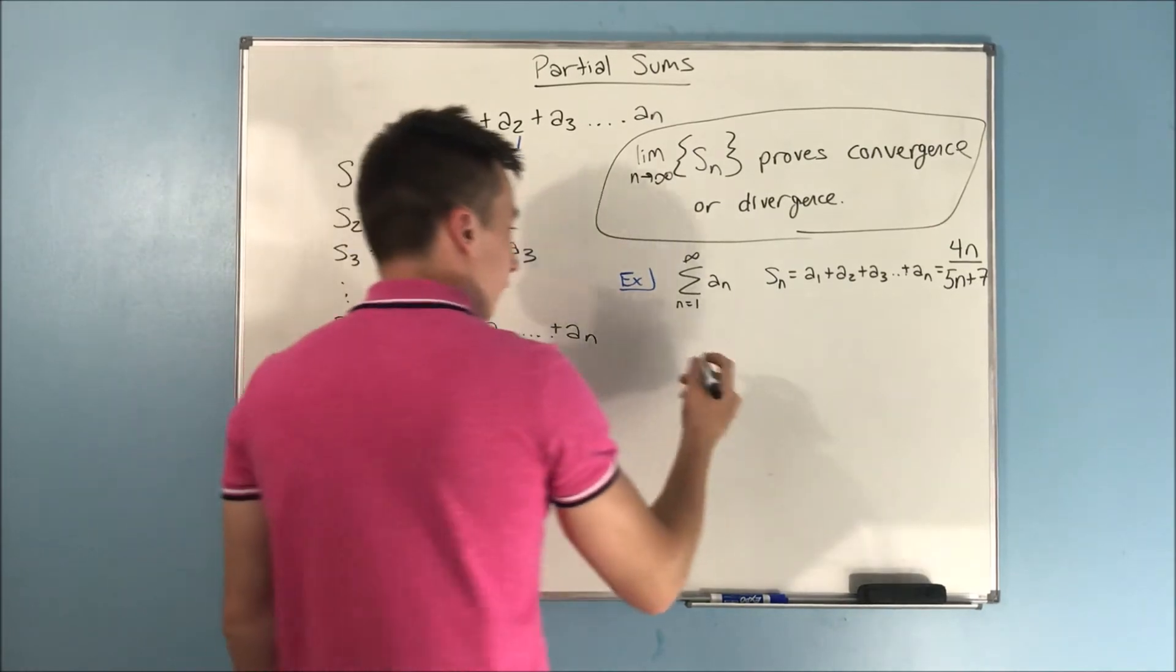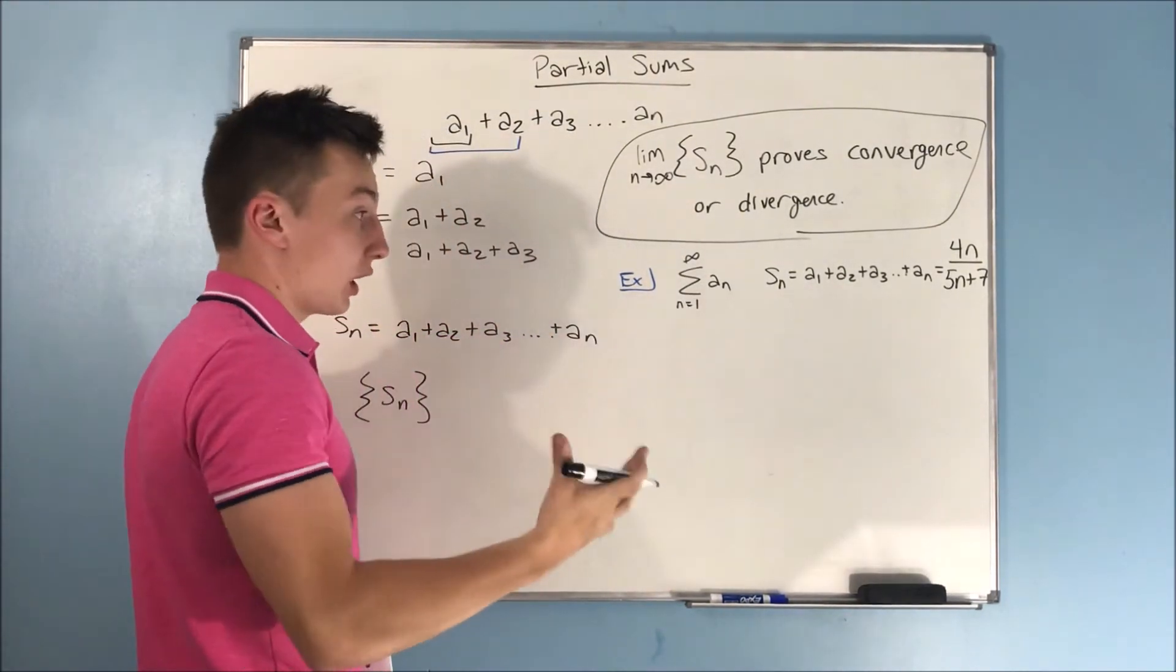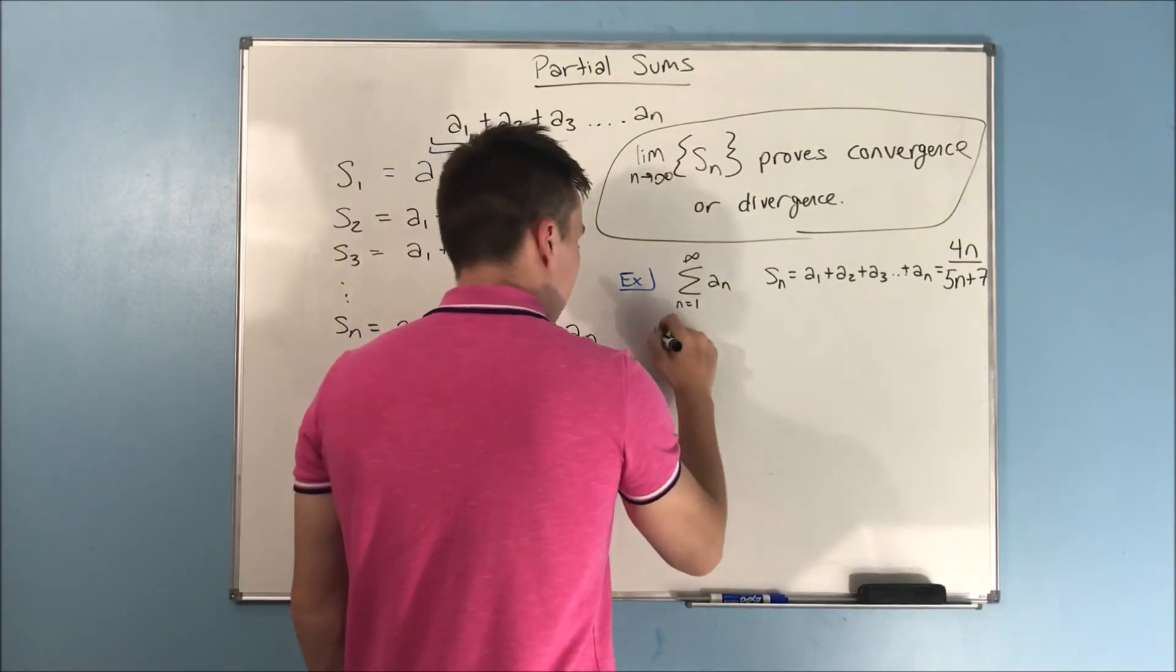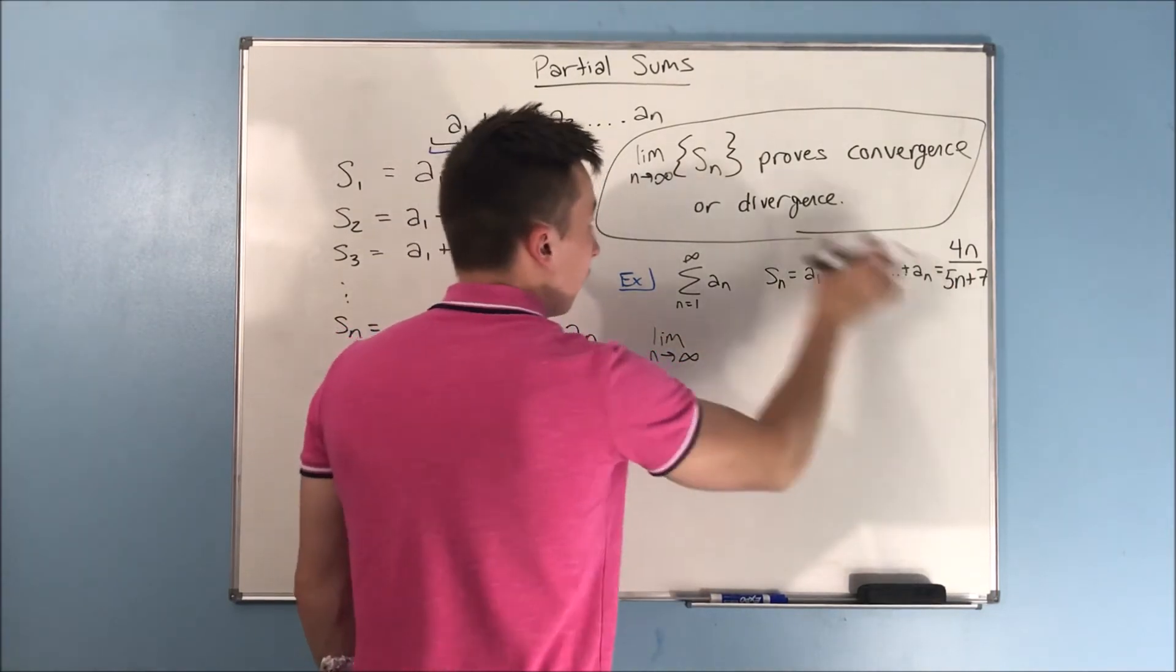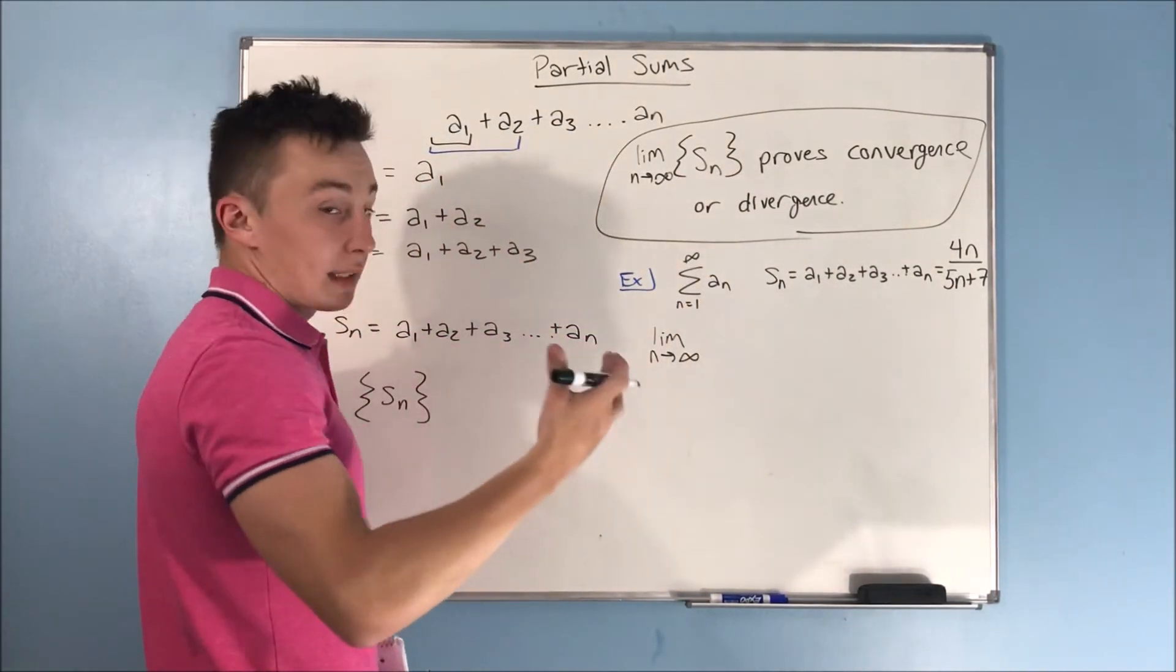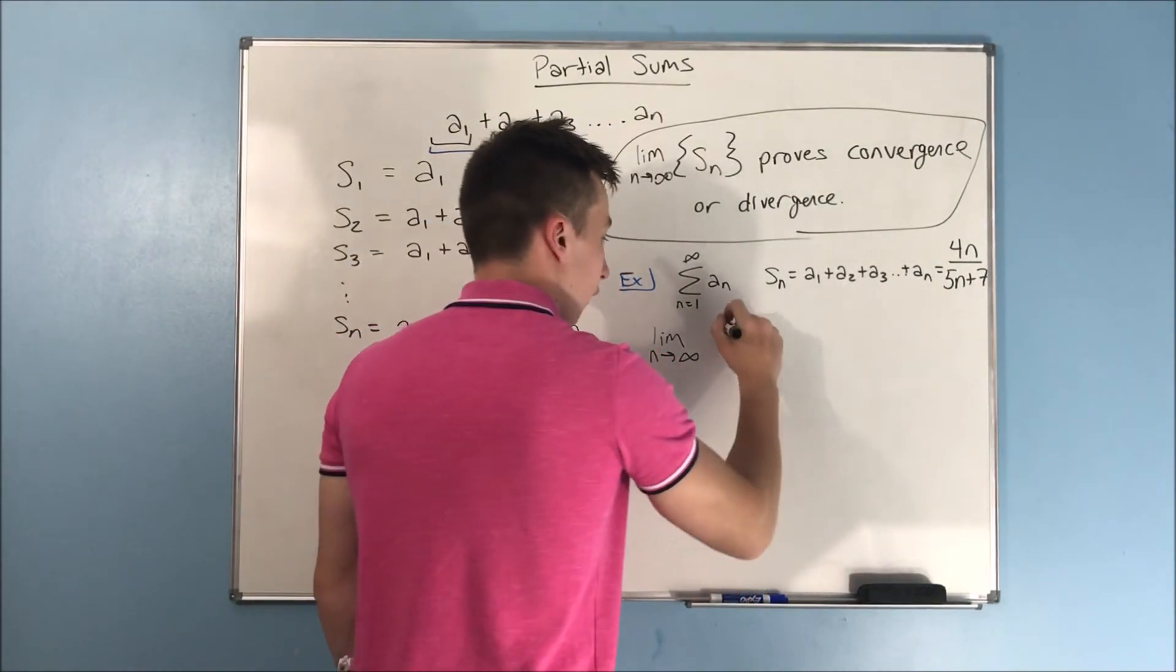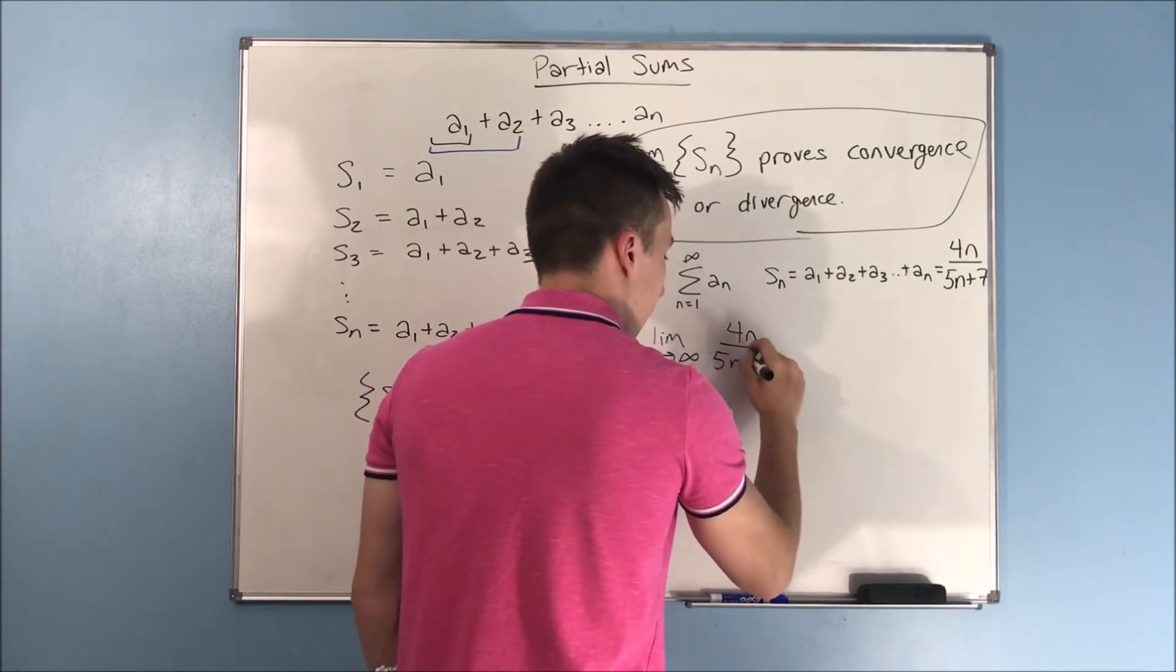So, what we do is, if we want to prove if this series is going to be convergent or divergent, we just take a limit. We take a limit as n approaches infinity of s sub n, that sequence s sub n, which is 4n over 5n plus 7.